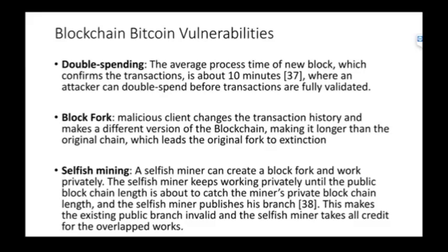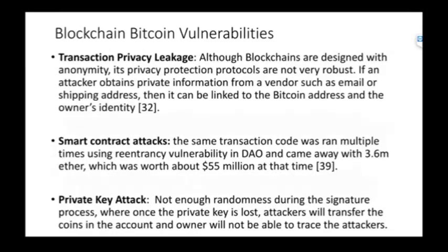There's also privacy leakage when the private information of an owner is revealed through not-as-secure private key concerns. There are smart contract attacks where the same transaction code can be run multiple times — for example, $55 million was taken because the same transaction code was exploited with a smart contract. There's also a private key attack: if the private key is discovered, attackers can transfer coins and cannot be traced.